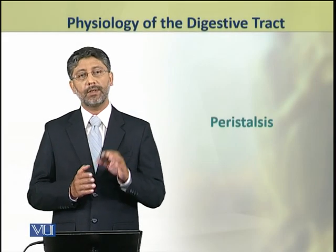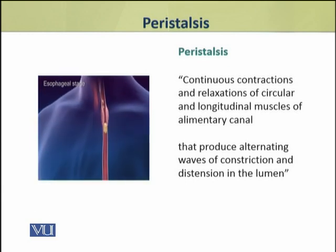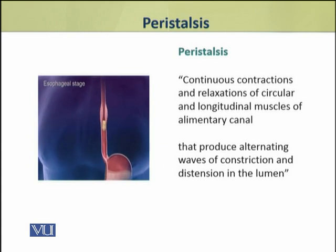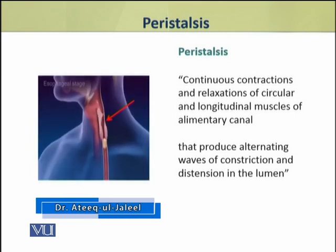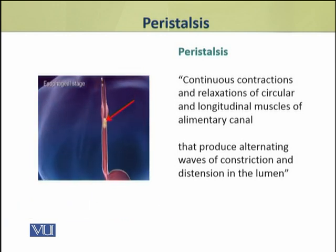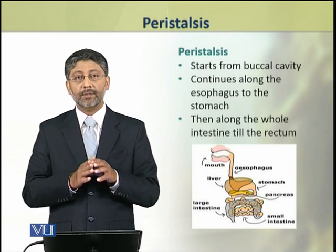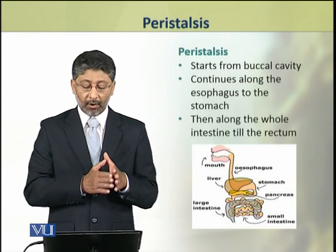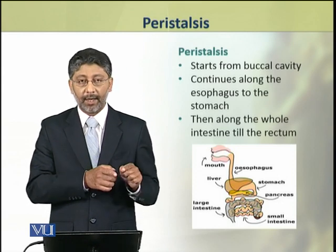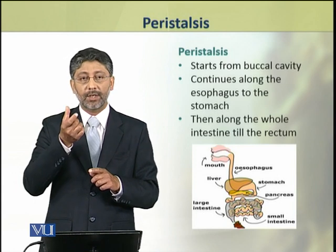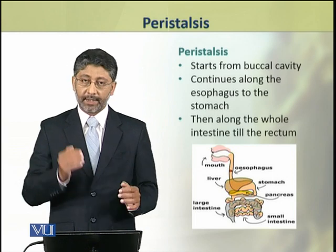Dear students, in this topic we shall discuss the process of peristalsis in detail. Peristalsis involves the continuous contractions and relaxations of circular and longitudinal muscles of the alimentary canal, which produce alternating waves of constriction and distention in the lumen. Peristalsis starts from the buccal cavity and continues along the length of esophagus to the stomach and then along the whole of the intestine till the rectum. This muscular wave starting from the buccal cavity continues till the end of the rectum — this is peristalsis.